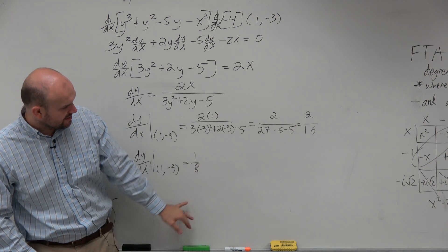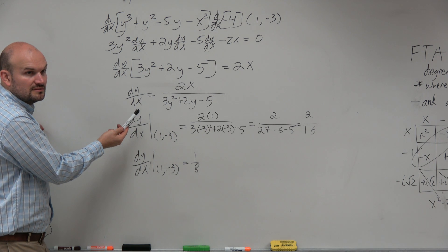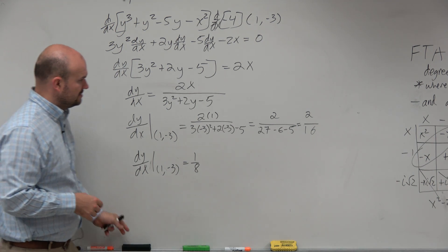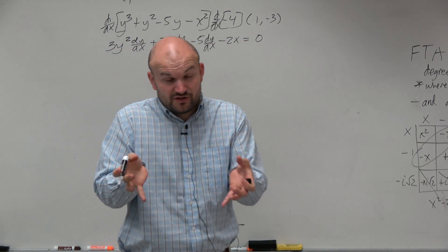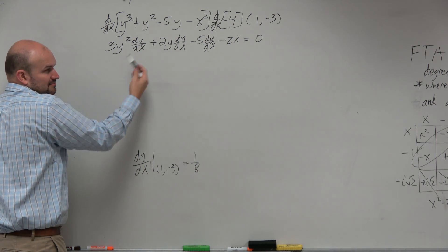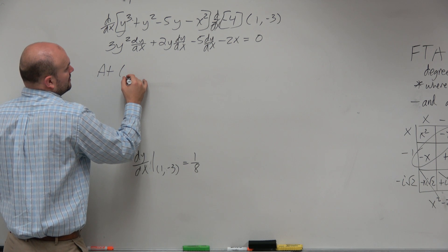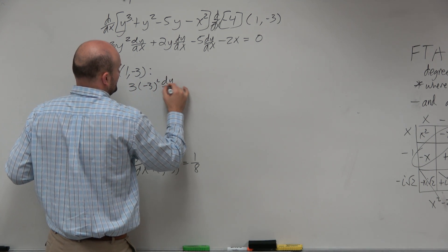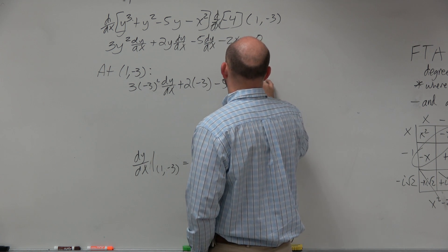So our answer is 1/8. Now, there is nothing wrong with factoring out the dy/dx's and solving for dy/dx — that makes intuitive sense. But doesn't it also make sense that instead of getting all the way to that step, we could also just plug in the point (1, -3) directly into the differentiated equation and say we are taking the derivative on both sides — and then write that line? And we can also plug in minus 2 times 1.